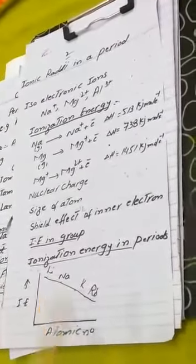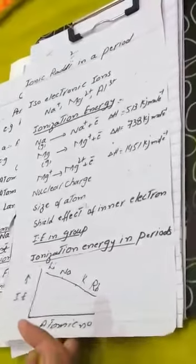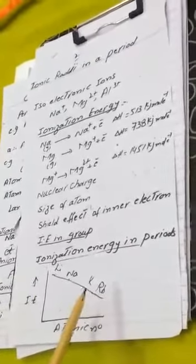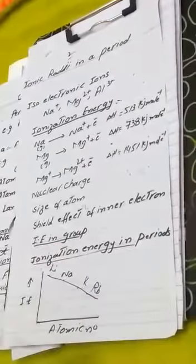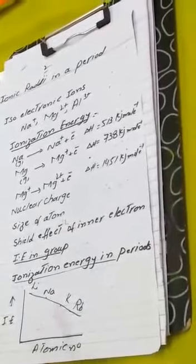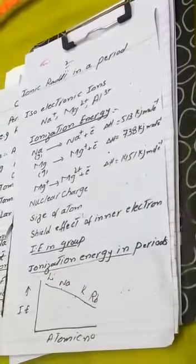Ionization energy in periods: ionization energy increases from left to right in a period. The reason is that atomic number increases one by one but the outermost shell remains constant. That is why there is a greater force of attraction between the nucleus and the outermost shell, and ionization energy increases from left to right in a period.